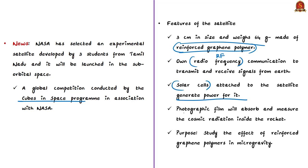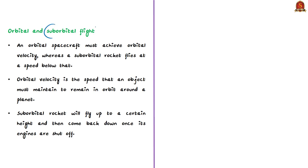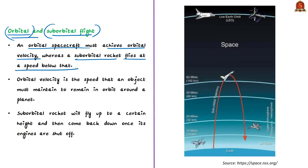The satellite has its own radio frequency communications to transmit and receive signals from earth, solar cells to generate power, and a photographic film to absorb and measure cosmic radiation. Inside the rocket, the satellite will study the effect of reinforced graphene polymers in microgravity conditions. The difference between orbital and sub-orbital flight lies in speed: an orbital spacecraft must achieve orbital velocity to remain in orbit around a planet, whereas a sub-orbital rocket flies at a speed below orbital velocity and will fly up to a certain height and come back once its engines are shut off.